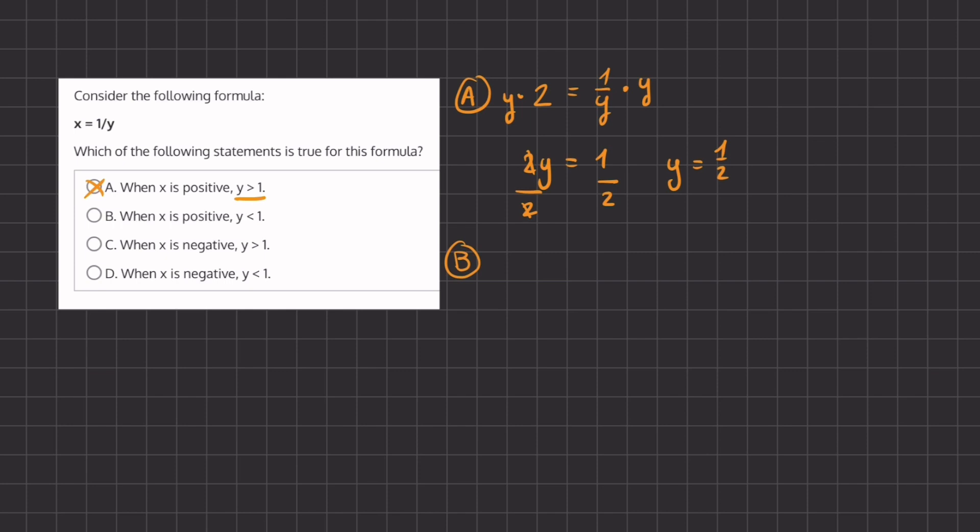Now in option B they are stating when x is positive, y is less than 1. Let's pick a value for x that is still positive, let's say it's 1 third, equals 1 over y.